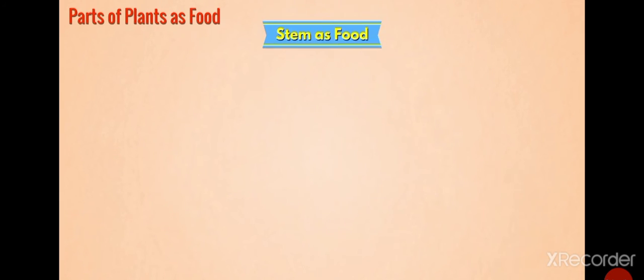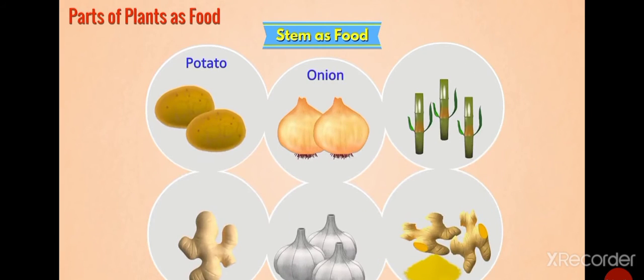We use stem of plants like potato, onion, sugarcane, ginger, garlic, turmeric, etc. as food.